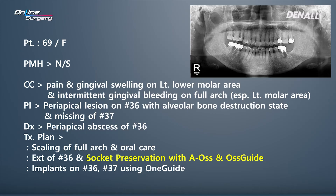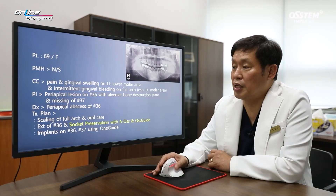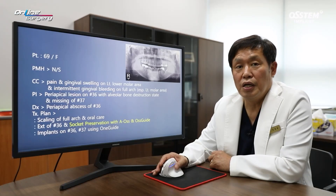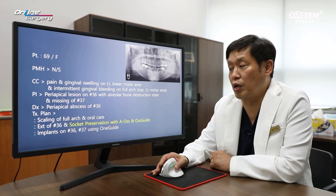If you look over here, a panoramic image was taken and periapical abscess was confirmed. There was overall bleeding within the patient's mouth. Full arch scaling and oral care was executed. In number 36, because the patient complained of pain at the day of initial visit, extraction was done. Socket preservation was done using only AOS along with Oscite, the collagen membrane.